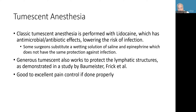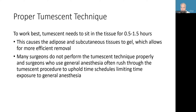Generous tumescent also works to protect lymphatic structures, as demonstrated by Baumeister and Frick. It has good to excellent pain control if done properly. To work best, the tumescent solution needs to sit in the tissue for a half hour to one and a half hours. This allows the tissue to gel and also allows the full effect of the pain control. Many surgeons use tumescent but rush through it and don't do it properly — often because they are also using general anesthesia and want to stick to very short surgery times. As a result, they don't get as good a tumescent effect and sometimes don't realize all the benefits of tumescent anesthesia.